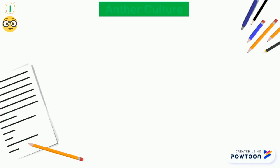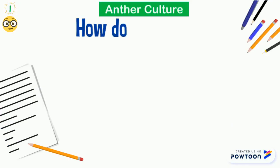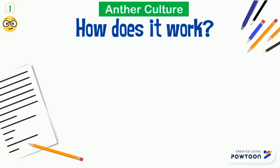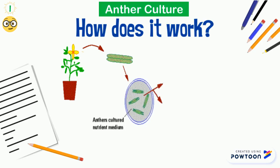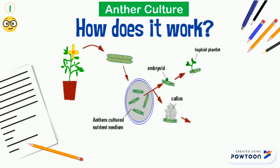How does anther culture work? First, anthers are extracted from the plant and then cultured on nutrient medium. Embryogenesis can be direct or indirect through callus induction to generate haploid plantlets.